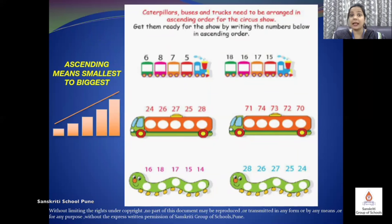Now comes the caterpillars, buses and trucks need to be arranged in ascending order for the circus show. So get them ready for the show by writing the numbers below in ascending order. What do we do in ascending order? We write from the smallest number to the biggest number. Very good. What is ascending order? When we start writing the numbers from smallest number to the biggest number. This is called arranging numbers in ascending order. So we have to arrange all the numbers in ascending order.